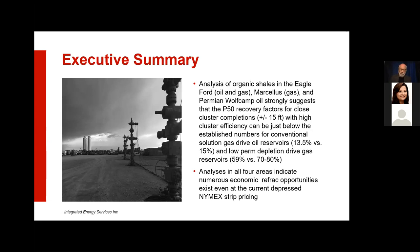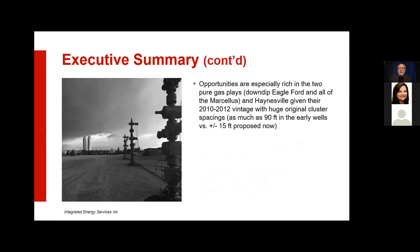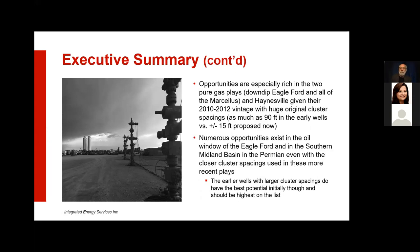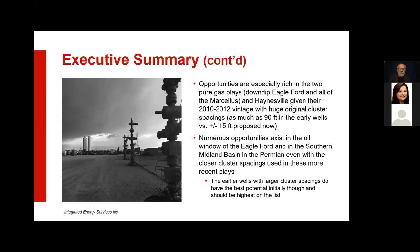We've done analyses in Eagle Ford gas, Marcellus gas, Permian oil, and Eagle Ford oil — all four areas have good refrac opportunities even at depressed prices. In areas like down-dip Eagle Ford and Marcellus, those plays started way before the liquids-rich plays, so you've got cluster spacings as wide as 90 feet in some areas — tremendous considering you're down to 15 feet now. Even the southern Midland Basin, which has been a stepchild area for a number of years, has a lot of good plays. About 40% of wells out there have cluster spacings that make them refrac candidates.